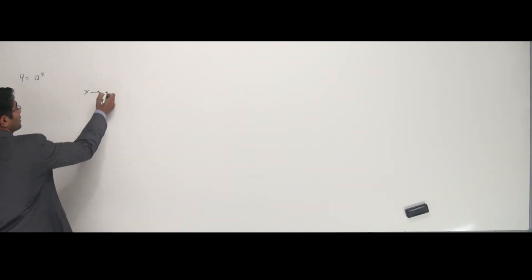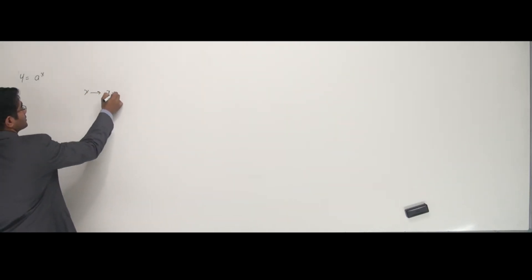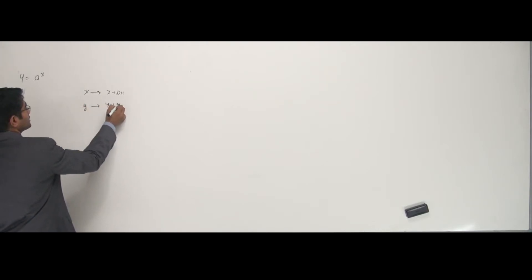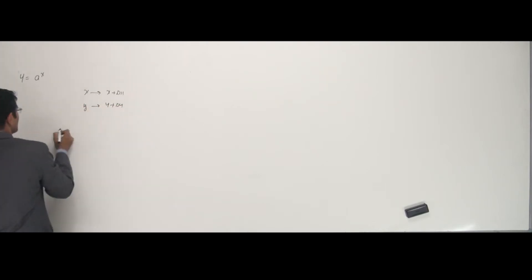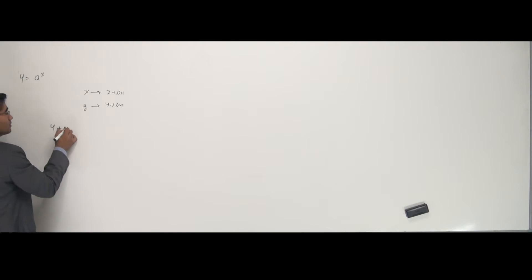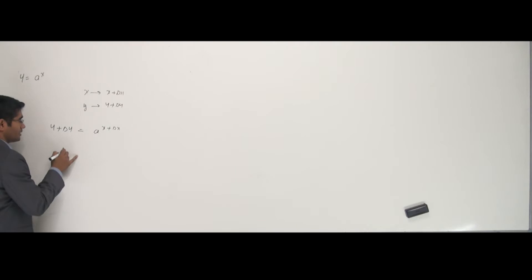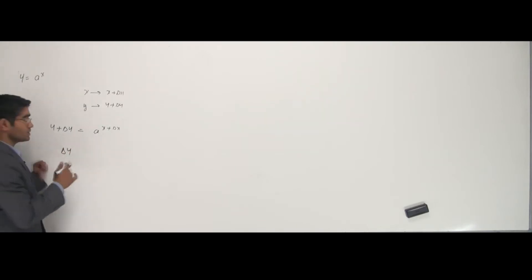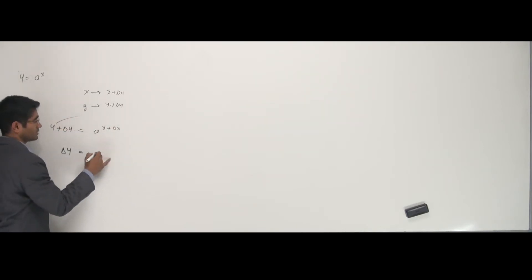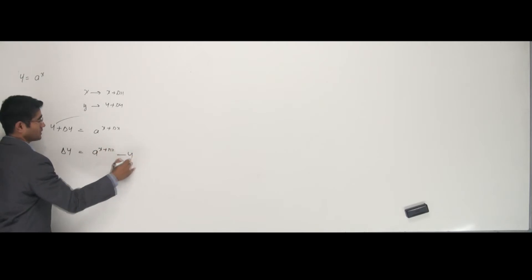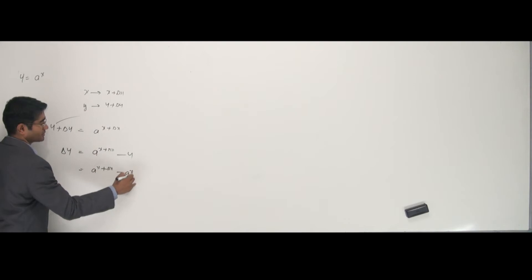I have to increase x with x plus delta x, and y to be y plus delta y, and see what happens here. I cannot say y plus delta y is equal to a to the power x plus delta x. The first stage says keep delta y on one side, so I am putting y on the other side: a to the power x plus delta x, minus y.